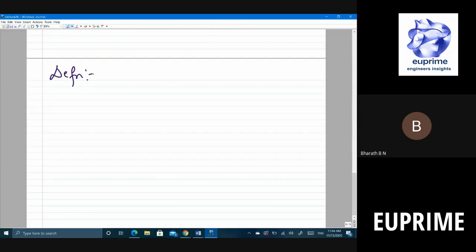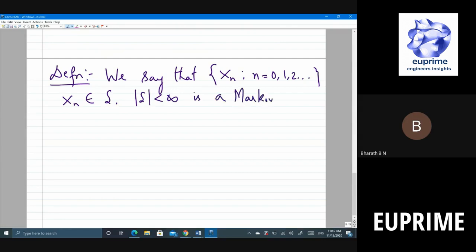We say that X_n, where X_n belongs to some state S, and the number of elements in the state is finite, is a Markov chain if probability...